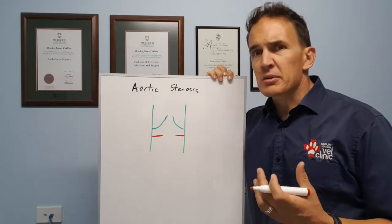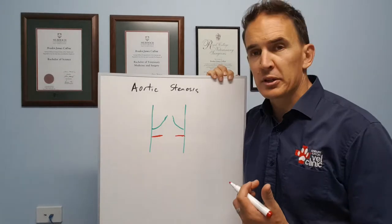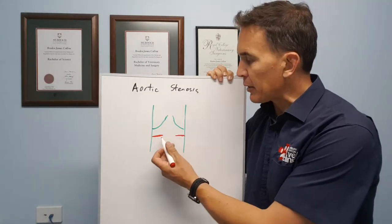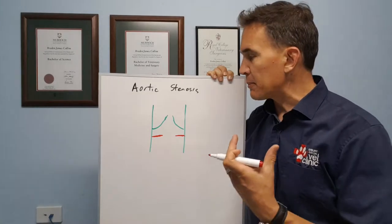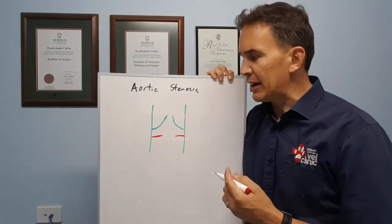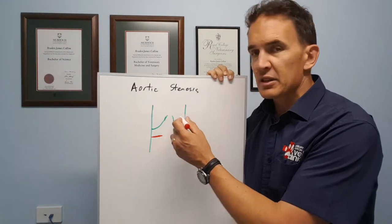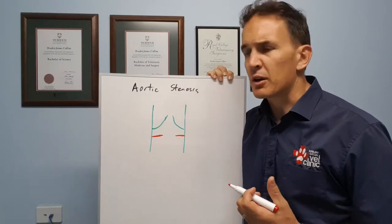Aortic stenosis we tend to divide into two groups. The most common form is what we call subaortic stenosis. We basically get a narrowing of the blood vessel where the aorta, the main blood vessel, is leaving the heart just near the valve. We can also get a stenosis affecting the valve itself, a true aortic valvular stenosis, but that's a lot less common.